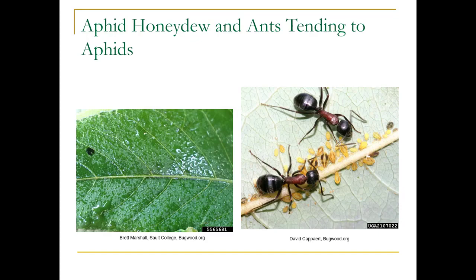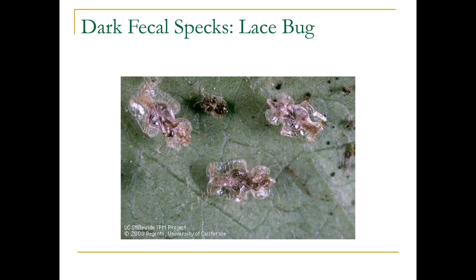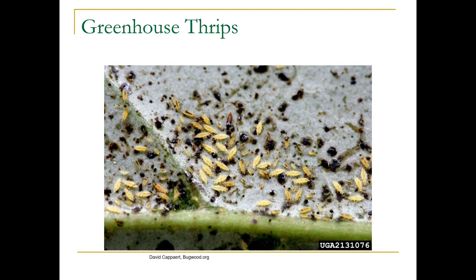Again, here are the fecal spots from the lace bug. These are thrips — very tiny insects, very difficult to see with the naked eye. You do need a hand lens. These small black dots are going to be an indicator, between that and the symptoms.